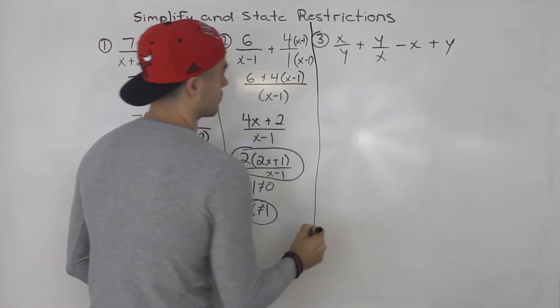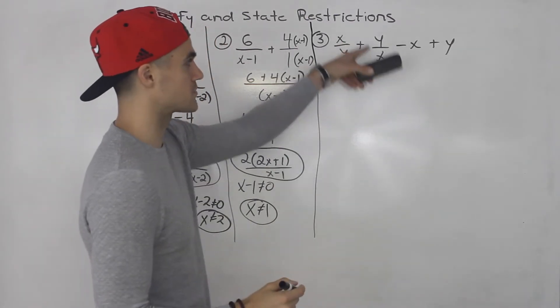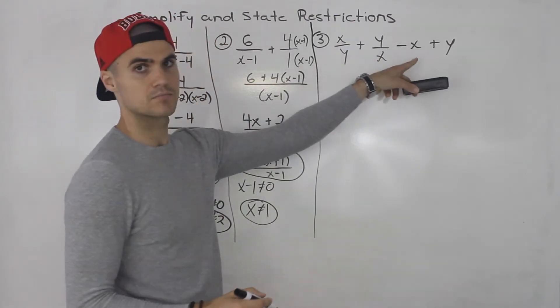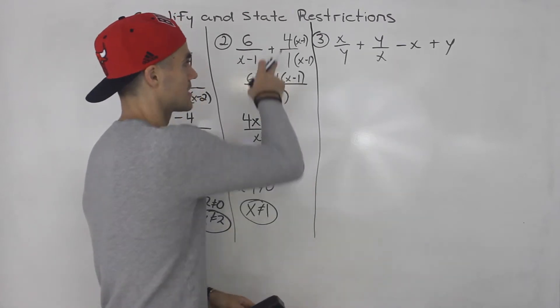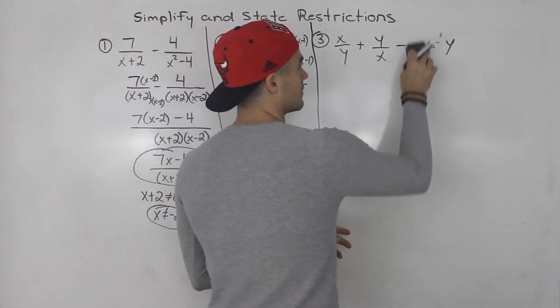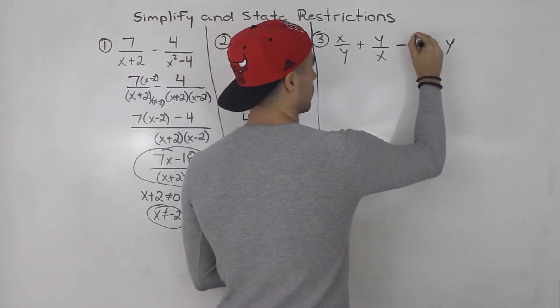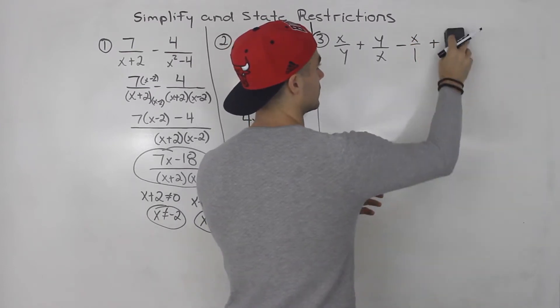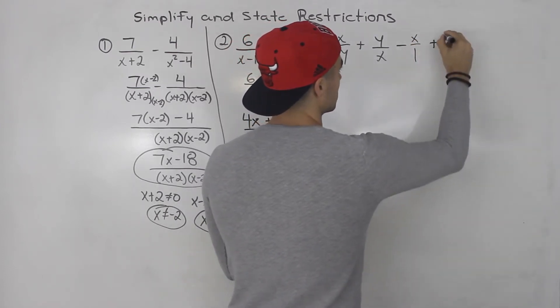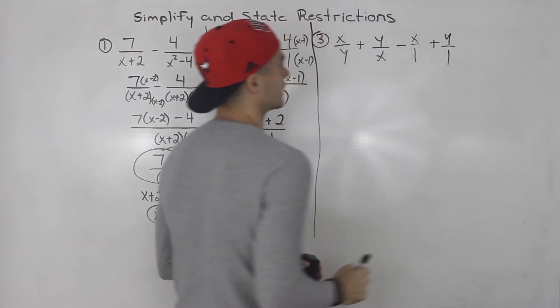Moving on to number 3. We've got x over y plus y over x minus x plus y. Now, as I mentioned here, this minus x, you want to put over 1. And then this y here, you want to put over 1 as well, whenever something is alone.